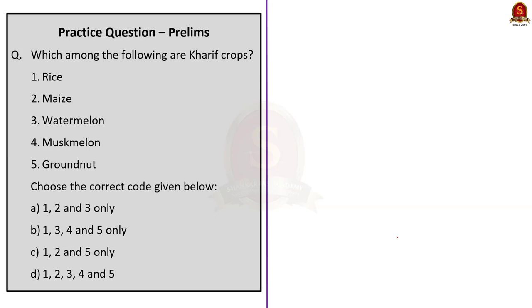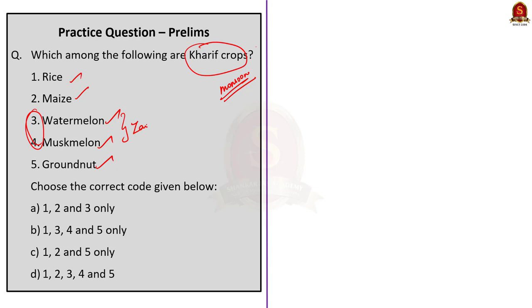Kharif crops means monsoon crops. The list given includes rice, maize, watermelon, muskmelon and groundnut. Two of them are incorrect — watermelon and muskmelon are Zayed crops. So apart from these two, the other three — rice, maize and groundnut — are Kharif crops. The correct answer to this question is option C: 1, 2 and 5 only.